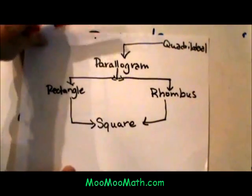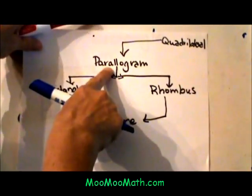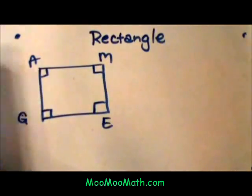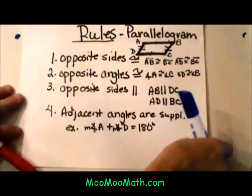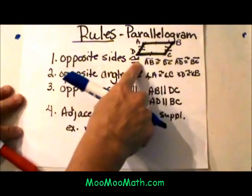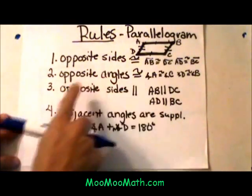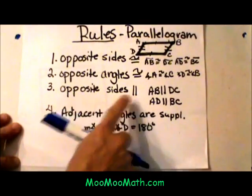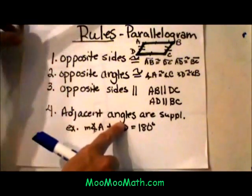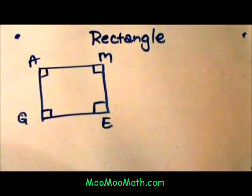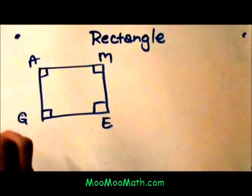A rectangle has every property that a parallelogram has. Let's review those properties. The opposite sides are congruent, meaning the same length, opposite angles are congruent, opposite sides are parallel, and the adjacent angles are supplementary. A rectangle has all those properties plus a couple more.